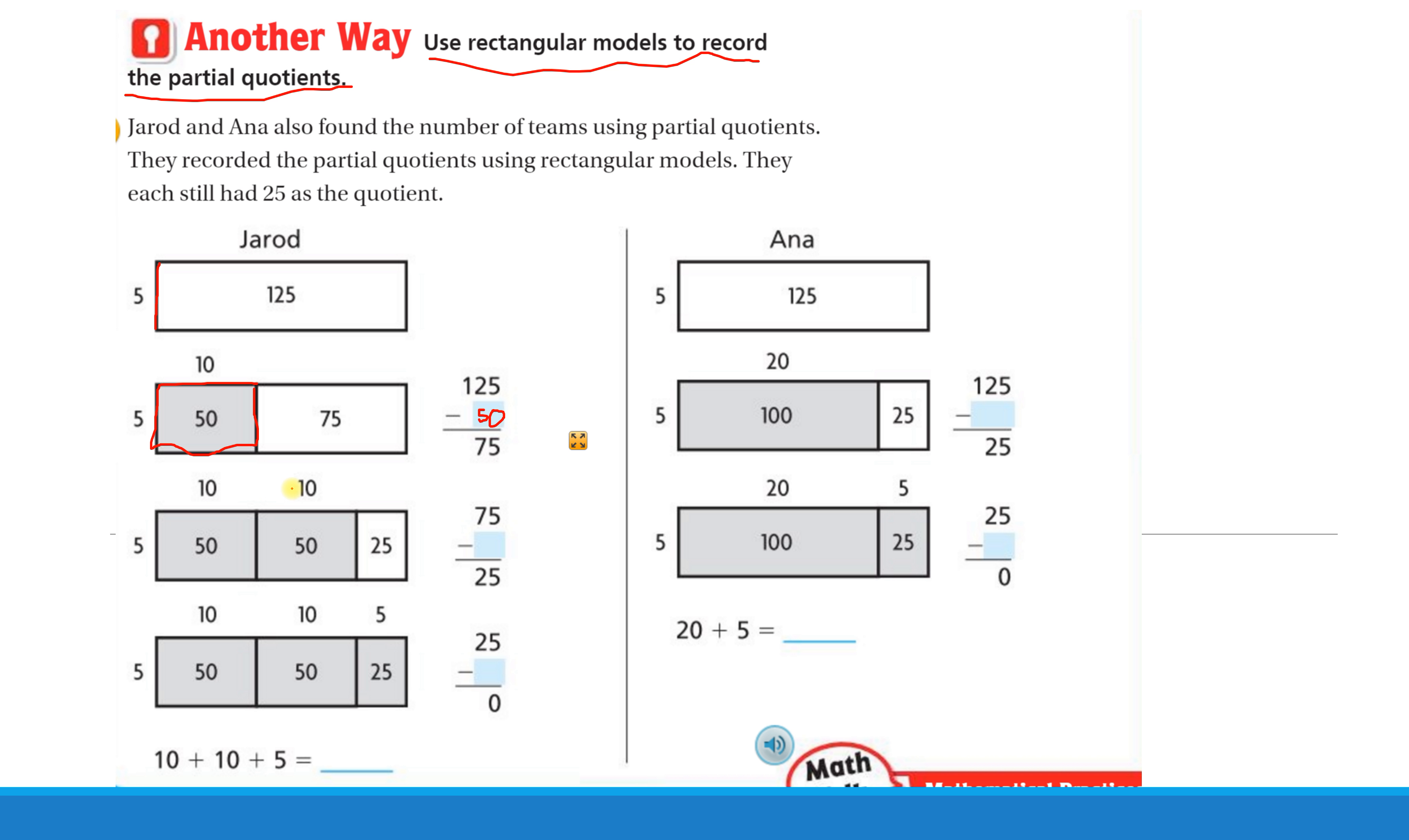So then he does another 10, which gives him another 50 to subtract. And so now he's used all of this for his quotient. So he's used 10 plus 10 would be 20, that's supposed to be a plus. 10 plus 10 would be 20, but he still has this part of the quotient that he hasn't used. And he realized that's 5 more columns of 5, or 5 more groups of 5, which is 25. He gets 0.